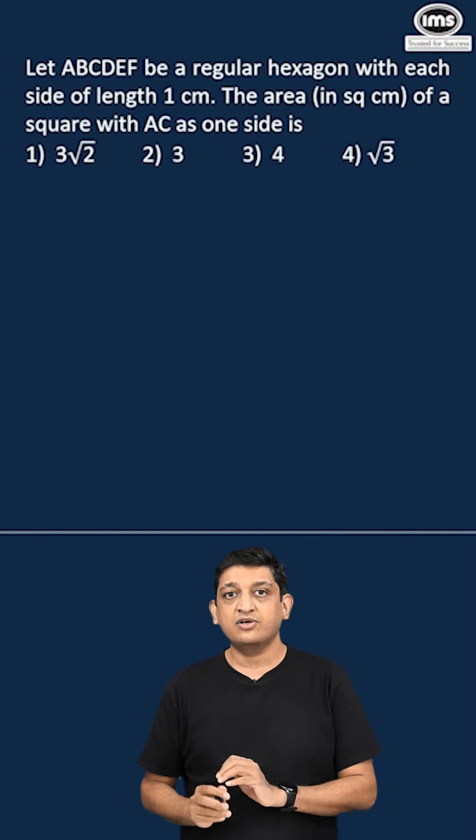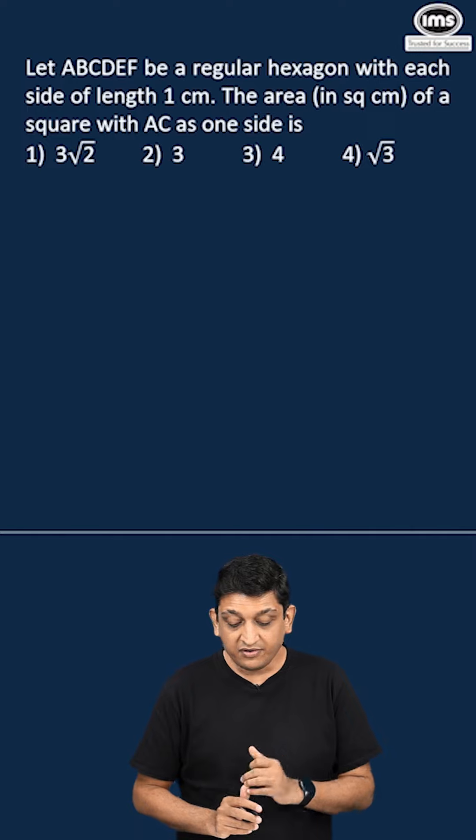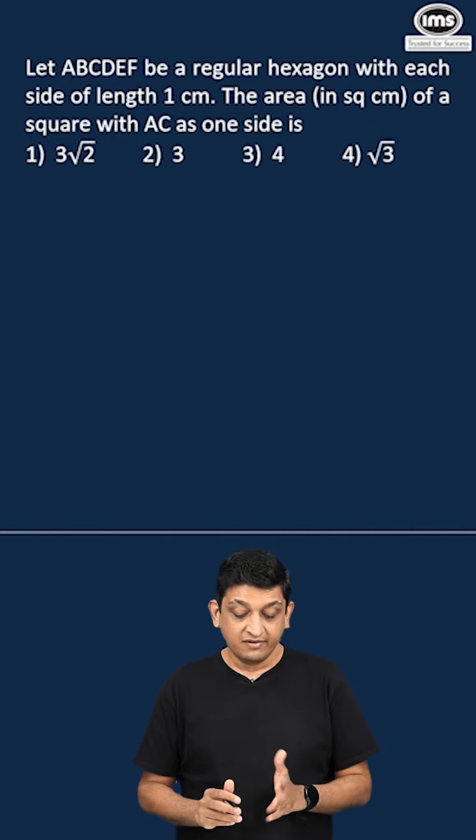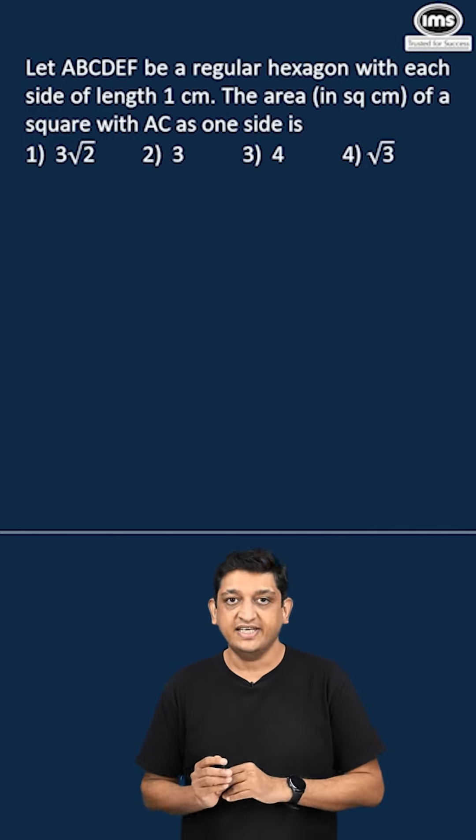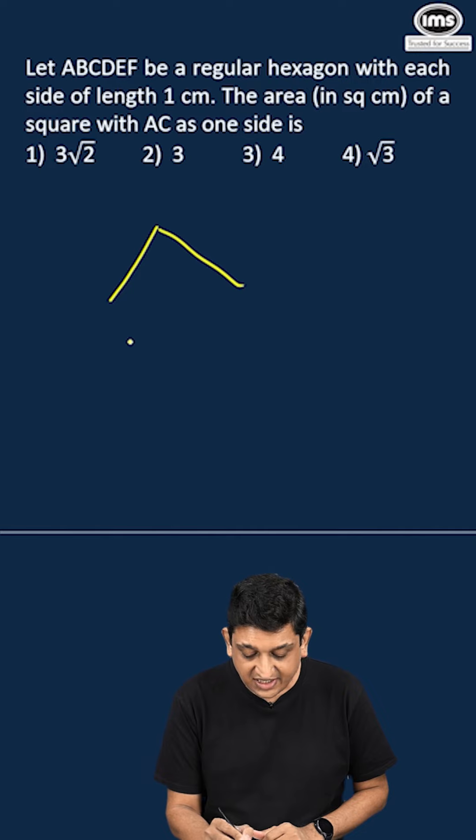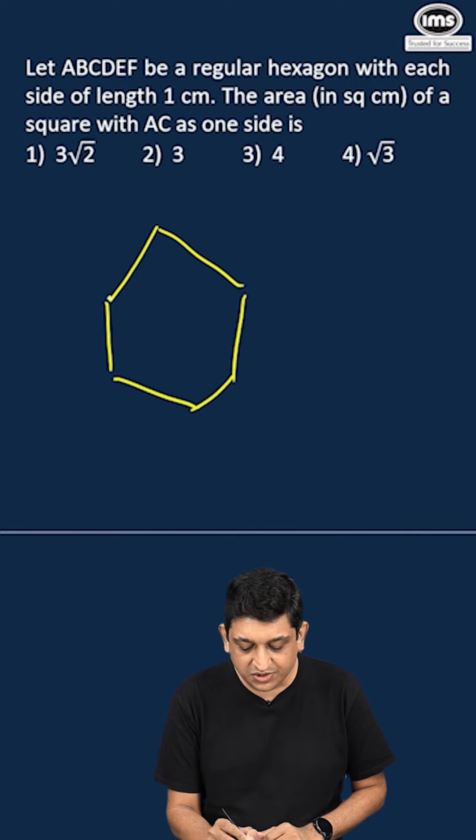In this question, we have a regular hexagon ABCDEF. We have to find the area of a square which has AC as one of its sides. So if we just draw the hexagon and see what happens in case of this particular side.